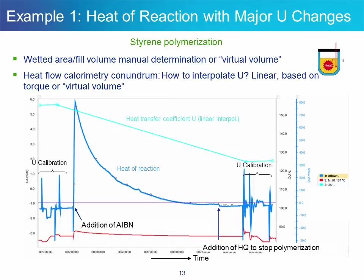This graph represents the heat of reaction in blue, where you can spot the two heat flow calibrations as well as the polymerization event — you can see the nice exotherm. You can also see the heat transfer coefficient values for each one of the two calibrations. Despite all the advantages of heat flow calorimetry, the user has to deal with the following: the fill volume in the reactor has to be recorded to account for the variation of heat exchange area during the course of the reaction.